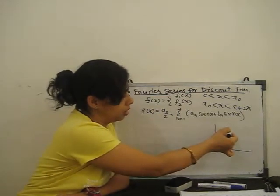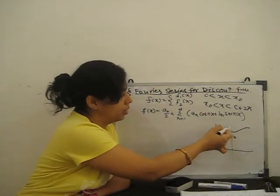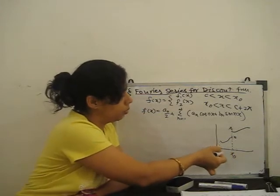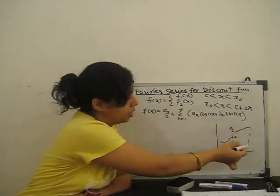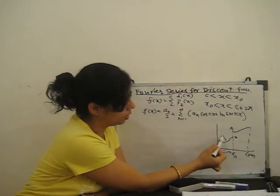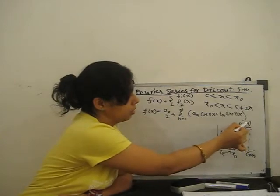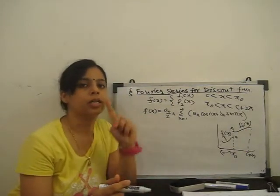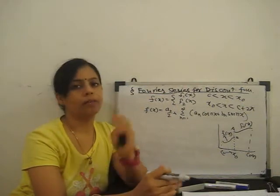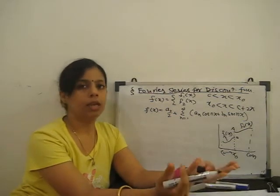If it is discontinuous, then x0 is the breaking point. The first function runs from c to x0, and the second function from x0 to c+2π. f1(x) lies up to x0, and f2(x) lies from x0 to c+2π. If the function is discontinuous within a particular period 0 to 2π, we say c to c+2π.